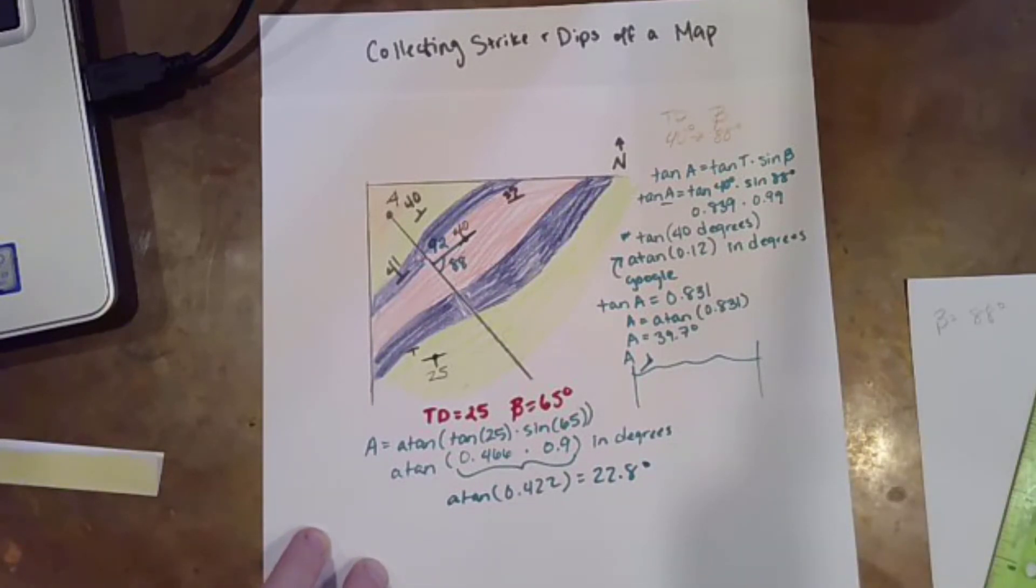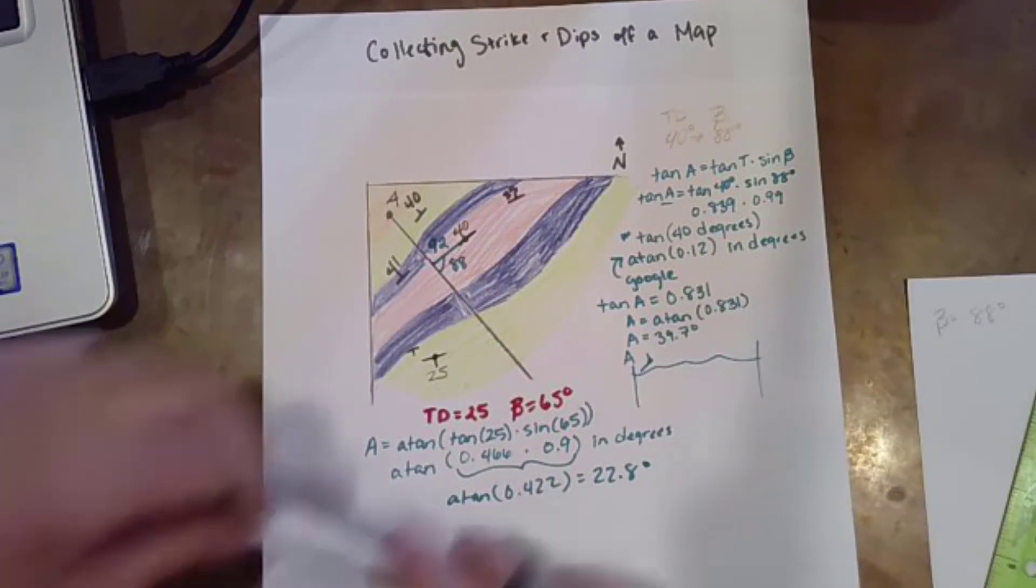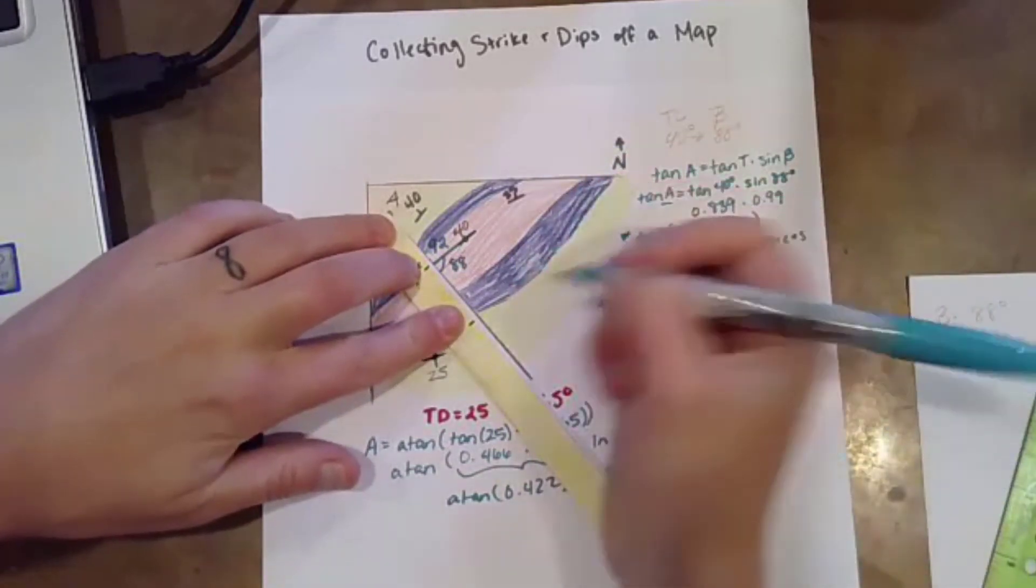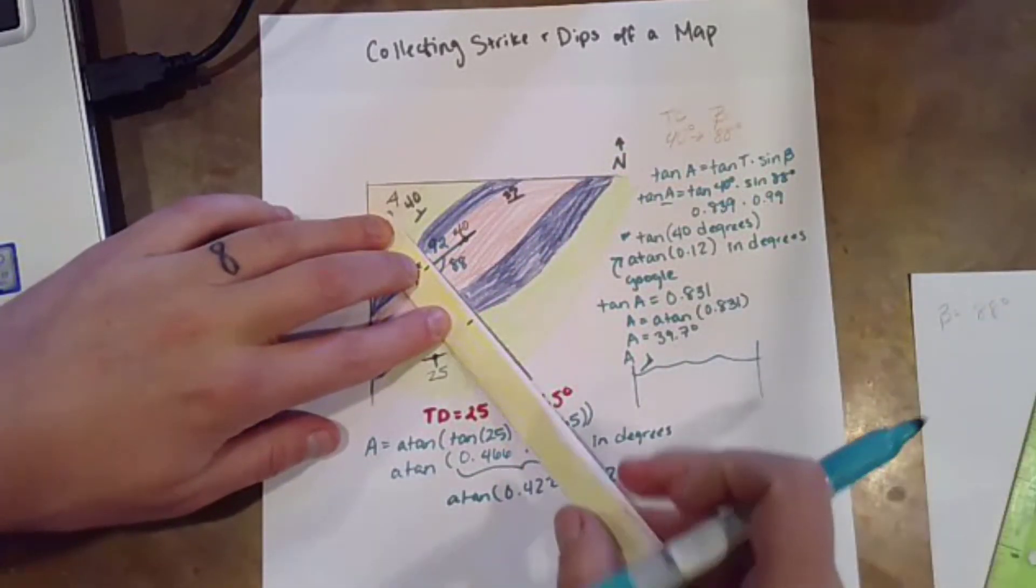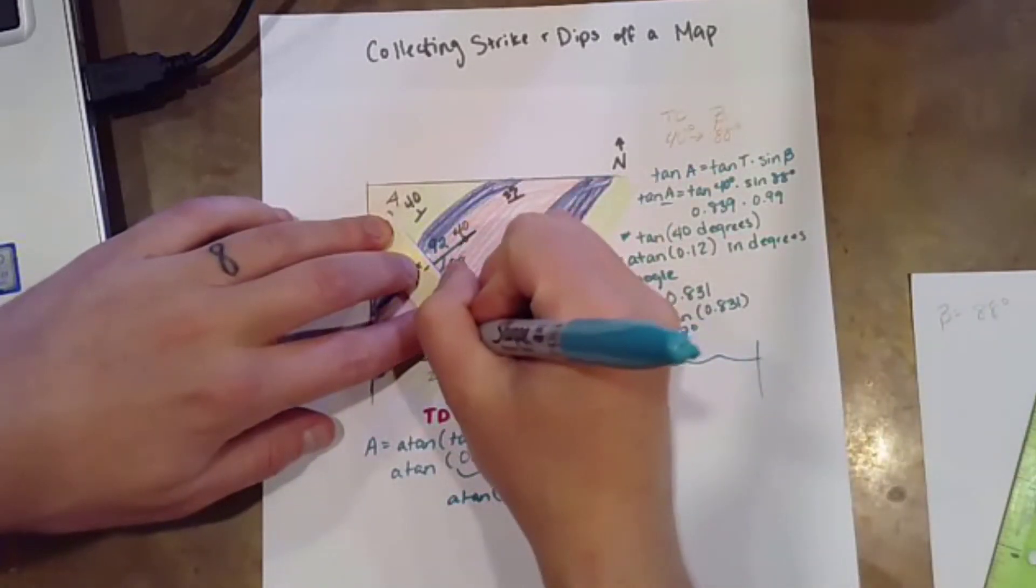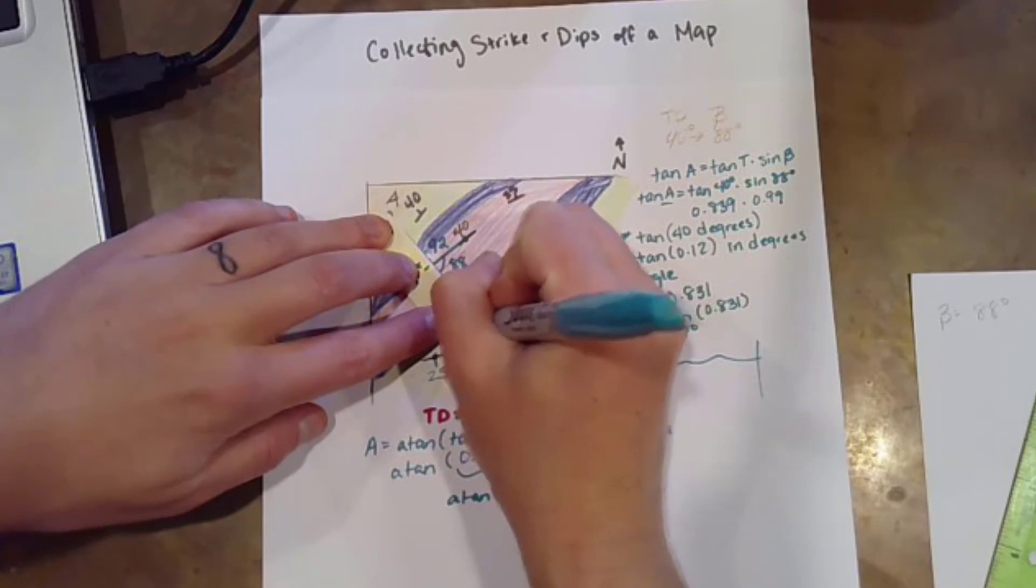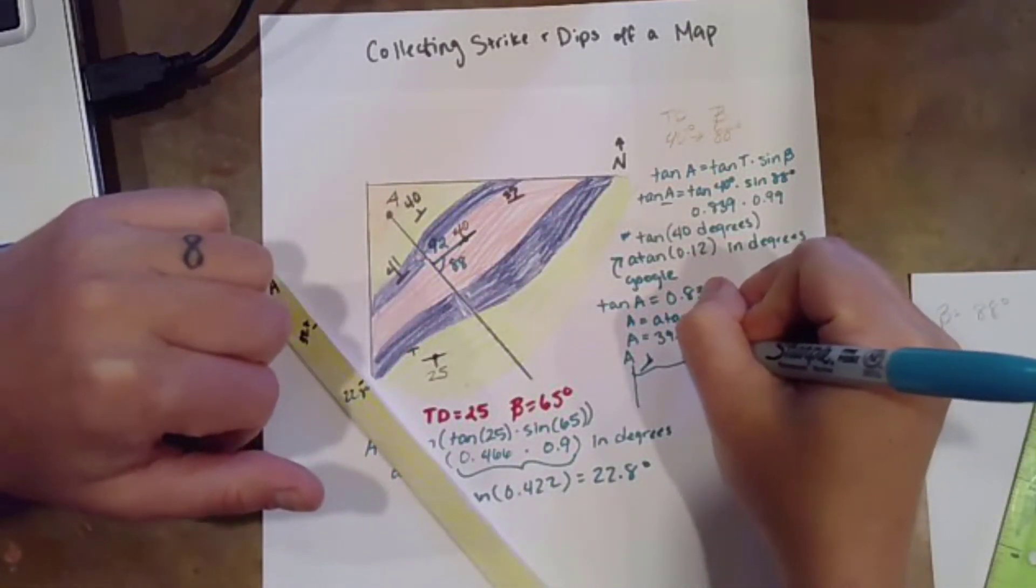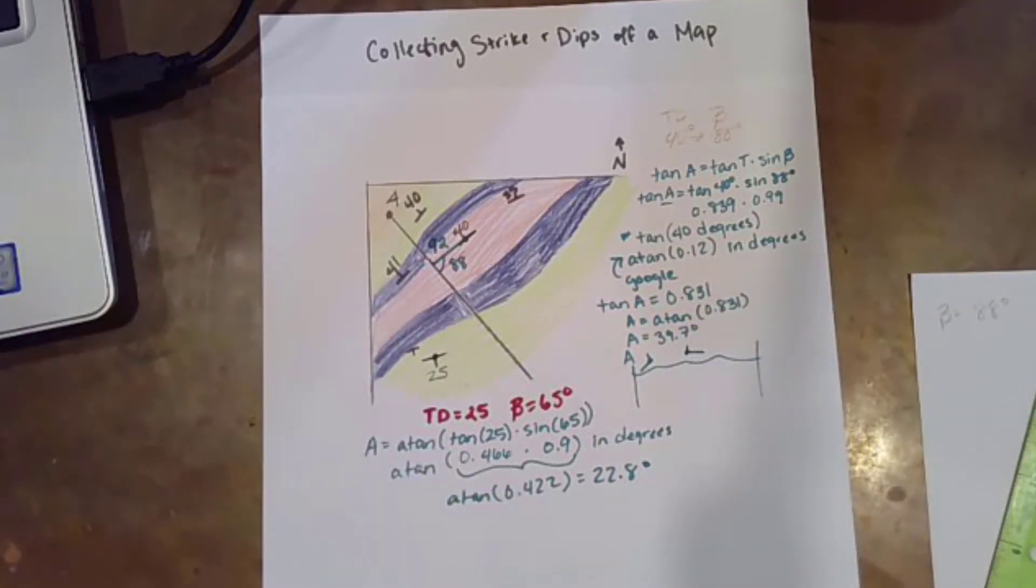So that means that at this position along my cross section, the value that I'm actually plotting, assuming that my cross section is vertically exaggerated only by one time, so not vertically exaggerated at all, is 22.8 degrees. Just come over here. And it's a little bit shallower.